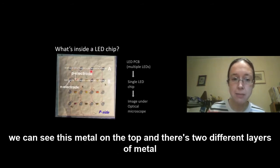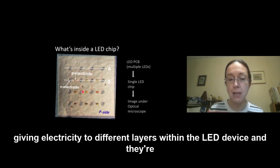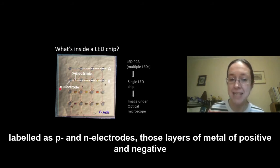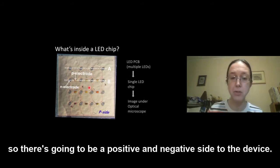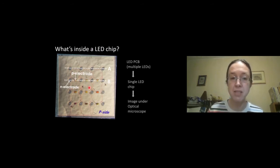We're going to zoom in even further. Now we can see this metal on the top and there's two different layers of metal giving electricity to different layers within the LED device and they're labeled as P and N electrodes, those layers of metal for positive and negative. So there's going to be a positive and a negative side to the device. But we still can't really see the light emitting material. We're going to have to zoom in even further.